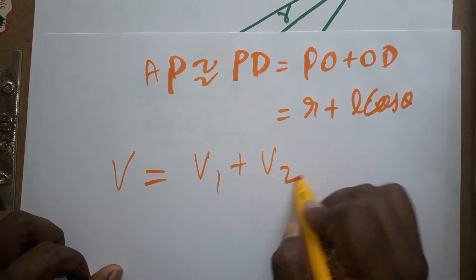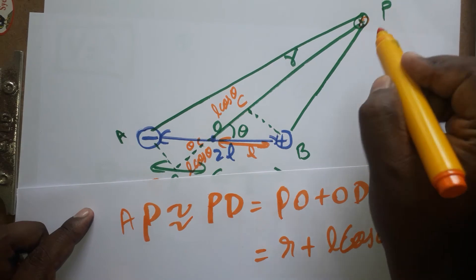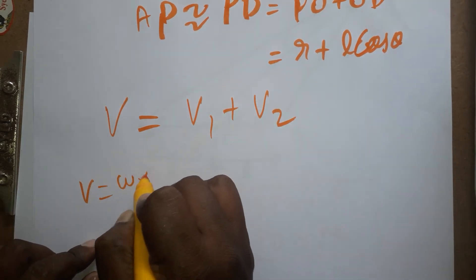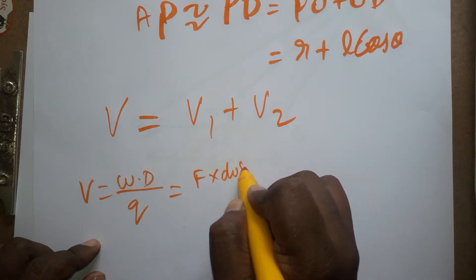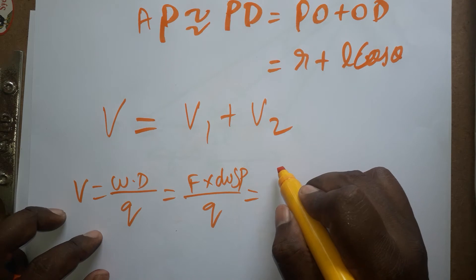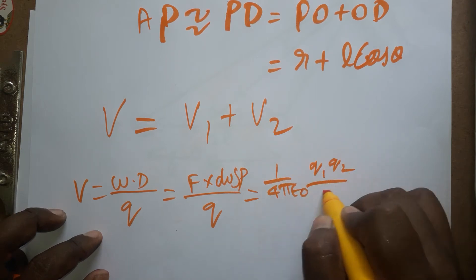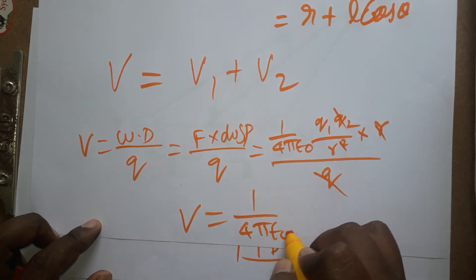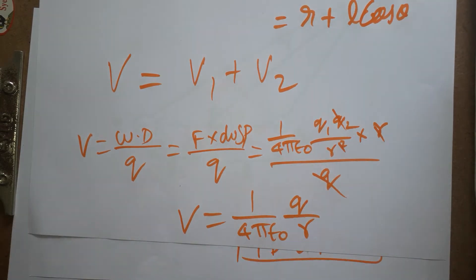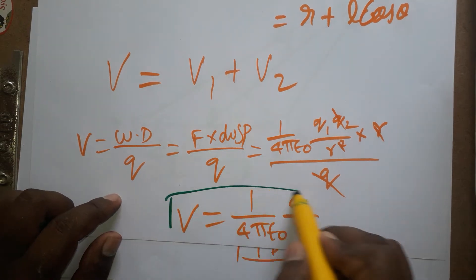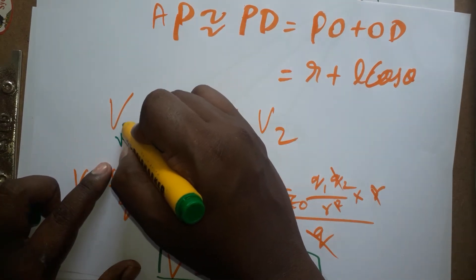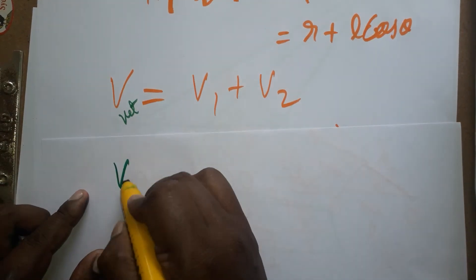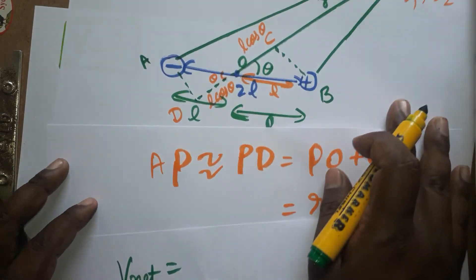The net voltage is V = V1 plus V2, where V1 is due to the positive charge and V2 is due to the negative charge. The voltage formula is V = (1 / 4πε₀) · q / r, derived from work done per charge using Coulomb's force. Since voltage is a scalar quantity, we take the electron charge as negative.